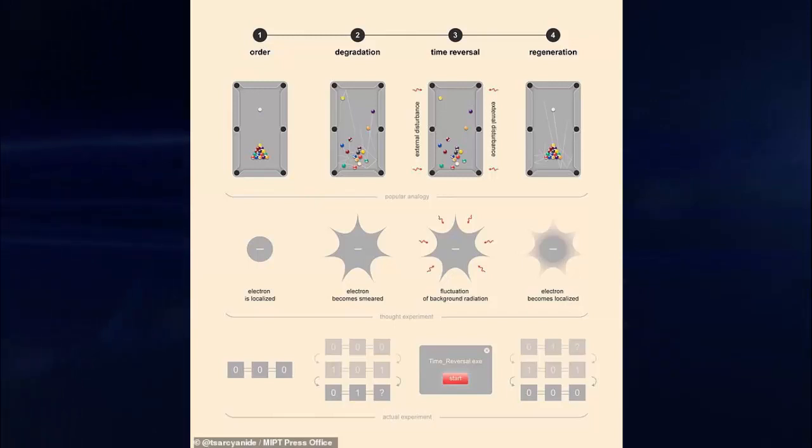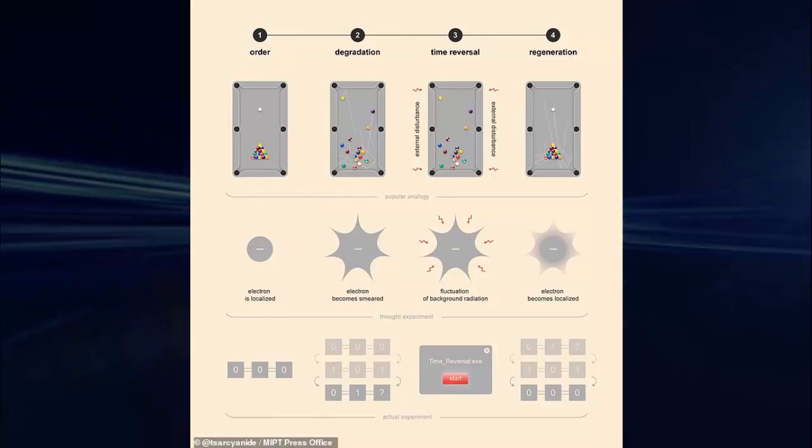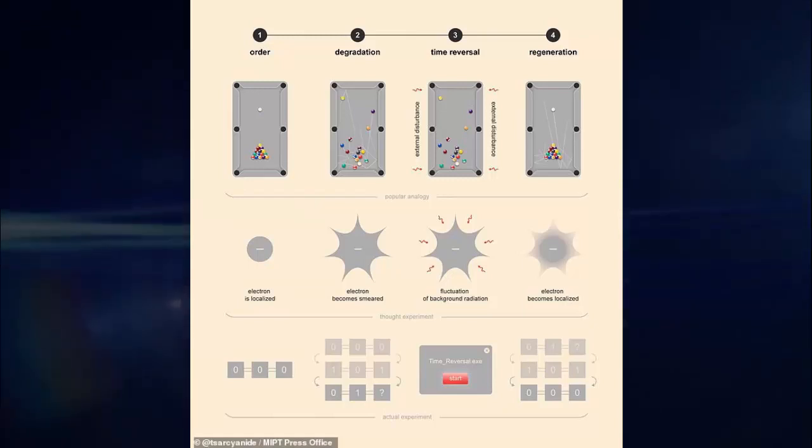We have artificially created a state that evolves in a direction opposite to that of the thermodynamic arrow of time, explained Dr. Gordy Lasuvik, who heads MIPS Laboratory of the Physics of Quantum Information. Here's the science part. The time machine is a rudimentary quantum computer consisting of electron cubits.